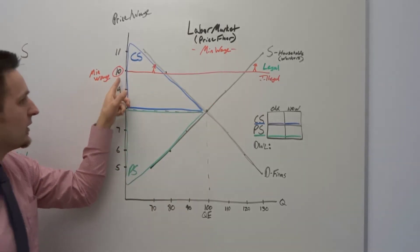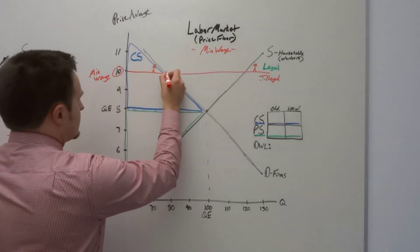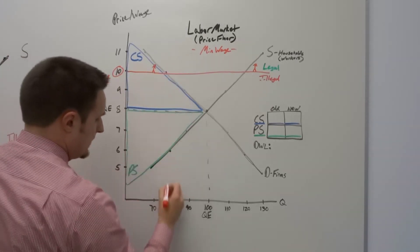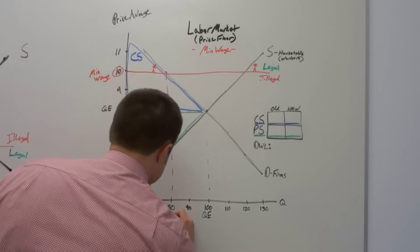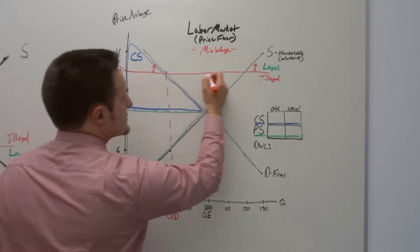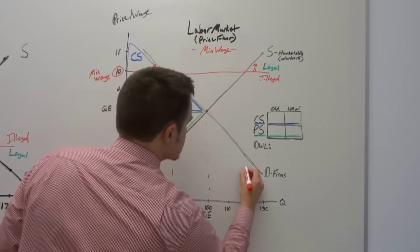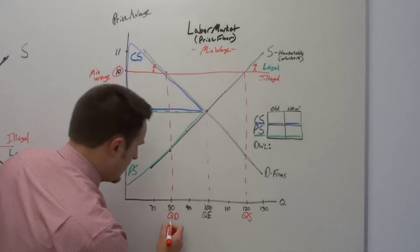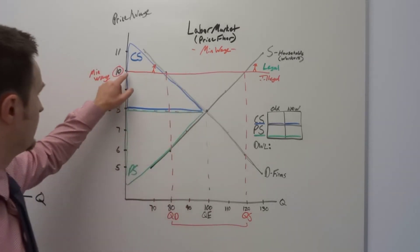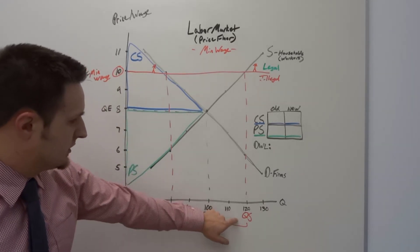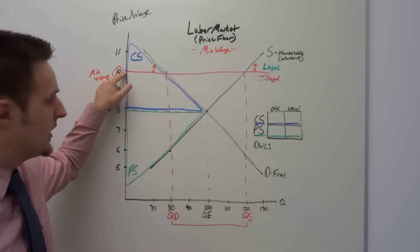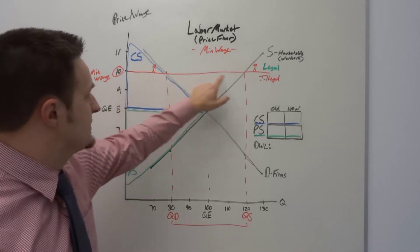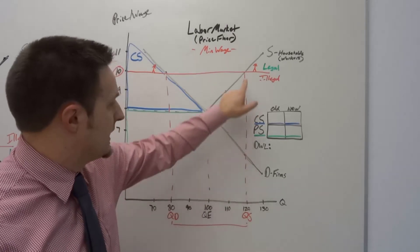Where does this price of $10 per hour intersect with the demand curve? Follow this price over to where it hits the demand curve — that quantity is approximately 80 units; that is the quantity demanded. Where does that price intersect with the supply curve? It's going to be approximately 120. So we now have a large gap between quantity demanded of 80 and quantity supplied of 120. We follow where the price hits the demand curve for quantity demanded, and where it hits the supply curve for quantity supplied.